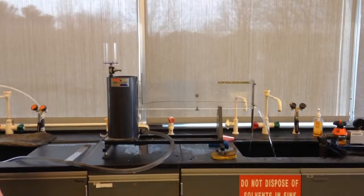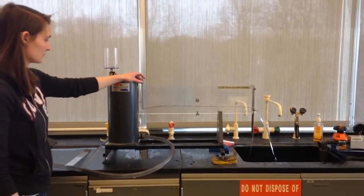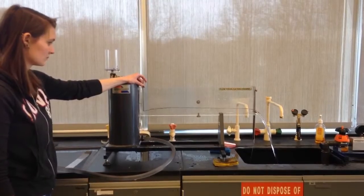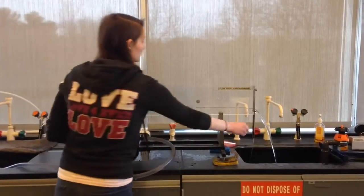Move the gate to a height below the critical depth of the channel. Move the overshot weir to a height above the critical depth to create a hydraulic jump.